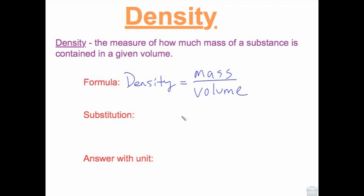Now we can do some math. First, write your formula. Density equals mass divided by volume. Then your substitution. You plug in your numbers. The mass was 127.7 grams, and the volume we found to be 16.8 milliliters.